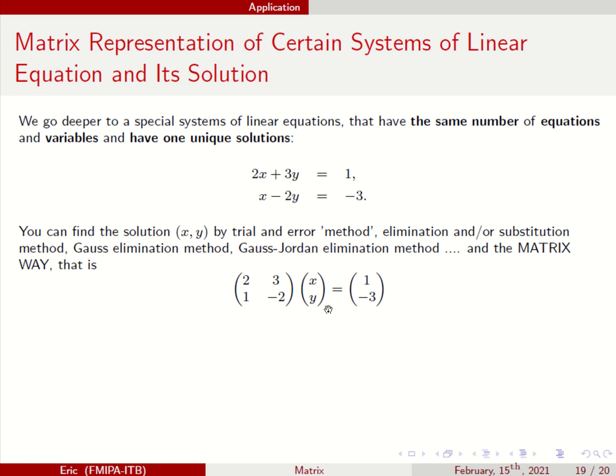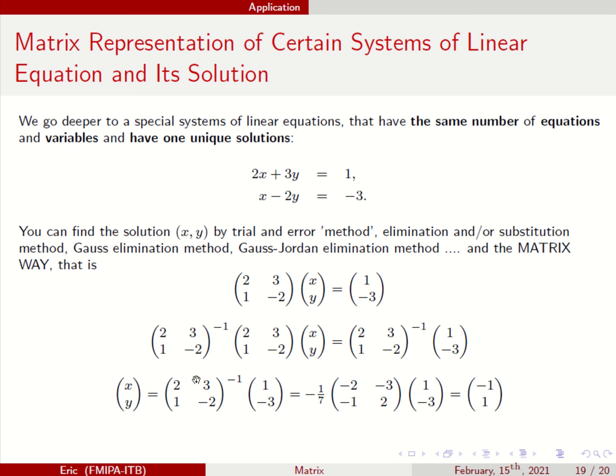And how do I find xy? I multiply from the left-hand side with the inverse. 2, 3, 1 minus 2 inverse. The inverse of this to the left and the right-hand side. And don't forget, the inverse times this, the A times A inverse should become identity. An identity times this will become just xy.